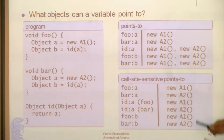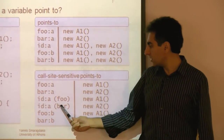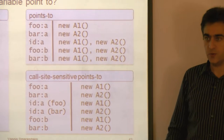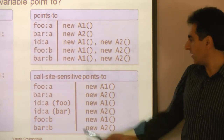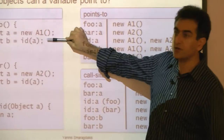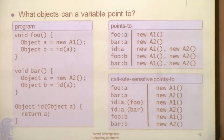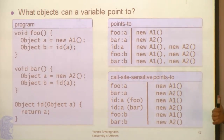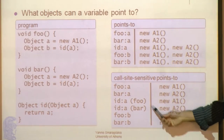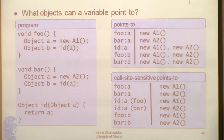Context sensitivity is a way to regain the precision we have lost. The way we do this is by analyzing all local variables under a context. Here we don't just say 'a in id' — we say 'a in id when id is called by foo' or 'a in id when id is called by bar.' More specifically, we say 'a in id when id gets called by this instruction of foo' and 'a in id when id gets called by this instruction of bar.' This simple kind of context sensitivity is the traditional kind called call site sensitivity — the analysis has information per variable qualified by call sites of the enclosing method.